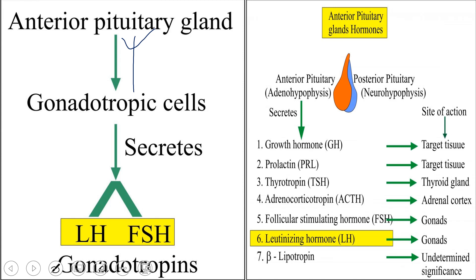Other than FSH and LH, the anterior pituitary releases a number of hormones. The pituitary has two important regions: anterior (adenohypophysis) and posterior (neurohypophysis). The anterior hypophysis produces more than six different hormones, including growth hormone, prolactin, thyrotropin (TSH), ACTH, FSH, LH, and lipotropins.